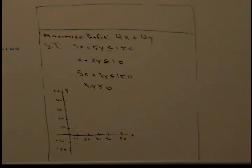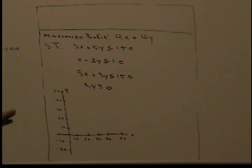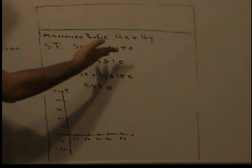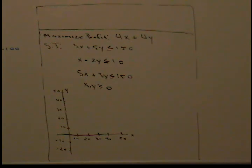Today we'll be discussing linear programming. Linear programming is pretty much just graphing linear equations to find an optimal solution. An optimal solution can be, for example, maximizing profit for an industry or minimizing cost, and so on.